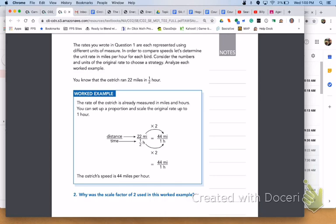You know that the ostrich ran 22 miles in half an hour. Let's take a look at the worked example. The rate of the ostrich is already measured in miles and hours, so you can set up a proportion and scale the original rate up to one hour. Therefore, the ostrich's speed is 44 miles per hour.